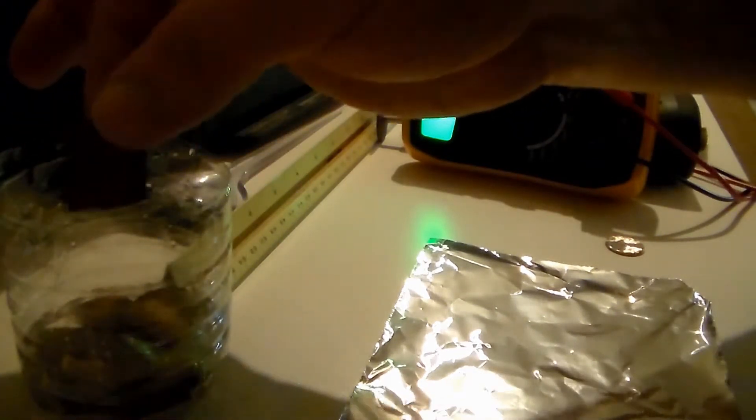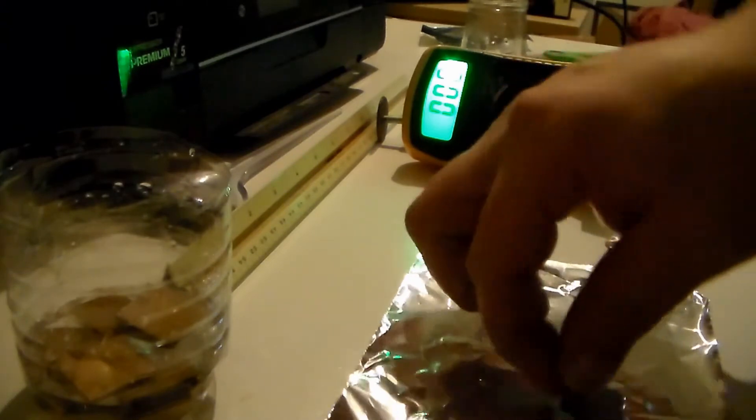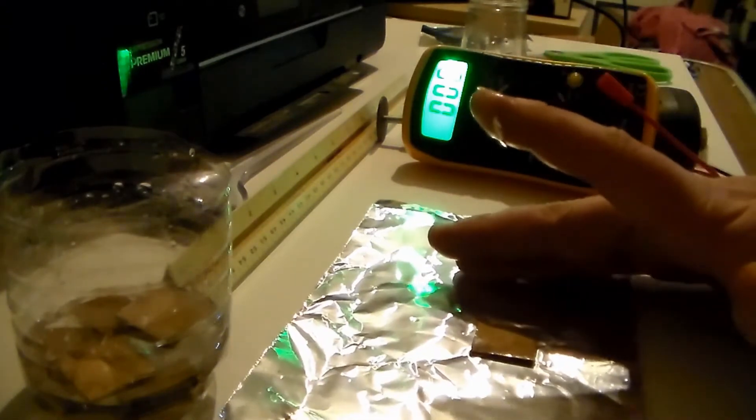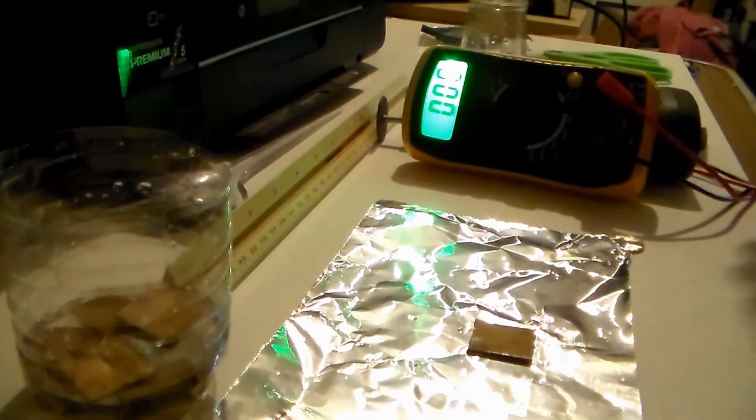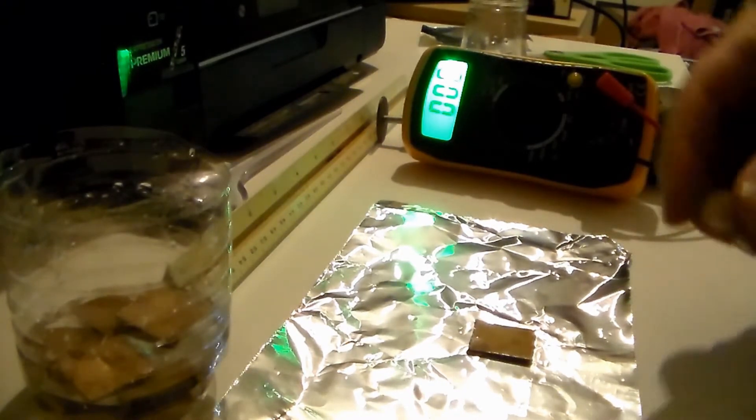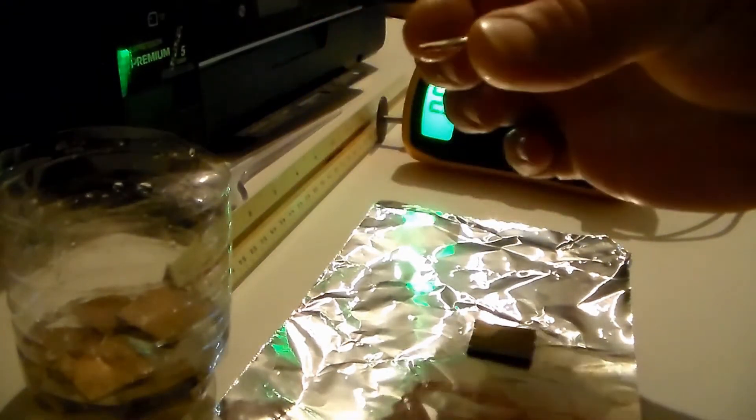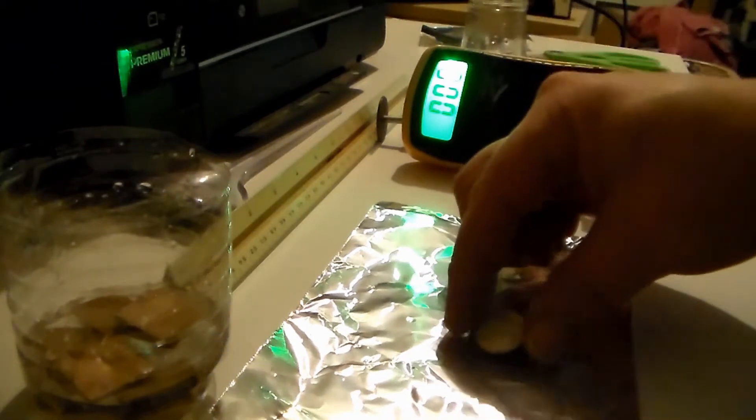This is gonna act as an electrolyte. Put that down on your foil. And go ahead and place one of the pennies that you scuffed up on top of that.